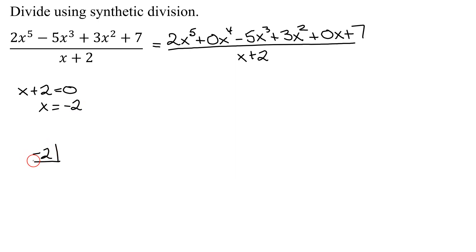So I put negative 2 in this box, not the positive 2. Now I'm going to strip off all my coefficients. So I have 2, 0, negative 5, positive 3, 0, and 7.